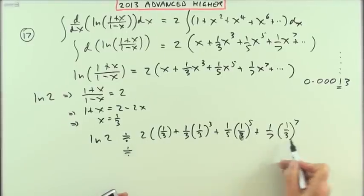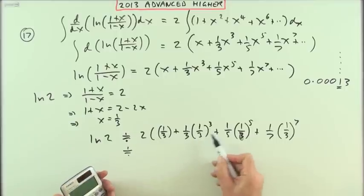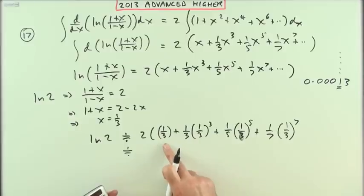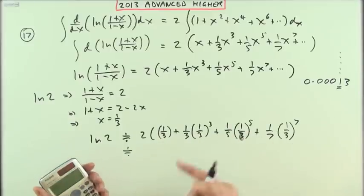For this I'm just going to have to type all that in, but I can save time by using the answer function. If I put 1/3 and press equals, then I just need to do answer plus answer cubed and so on.